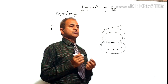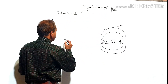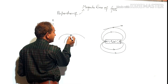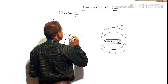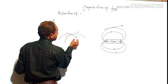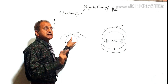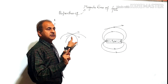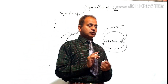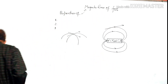Property three: two magnetic lines of force can never intersect each other. Because if they do, suppose they intersect at a point, then two tangents can be drawn at the same point, which gives two directions of magnetic field intensity at the same point — which is not possible. So two magnetic lines of force can never intersect each other.